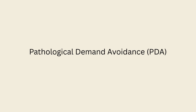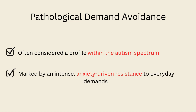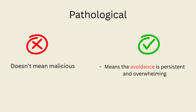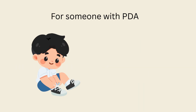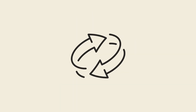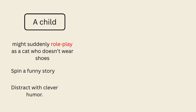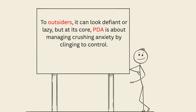Pathological Demand Avoidance, often considered a profile within the autism spectrum, is marked by an intense anxiety-driven resistance to everyday demands. The word 'pathological' here doesn't mean malicious — it means the avoidance is persistent and overwhelming, not just the occasional stubborn 'no' every child gives. For someone with PDA, even simple requests like 'put on your shoes' or 'brush your teeth' can trigger panic that feels as urgent as a survival threat. Instead of outright refusal, avoidance often takes creative forms — a child might suddenly role-play as a cat who doesn't wear shoes, spin a funny story, or distract with clever humor. Teens and adults may use more subtle strategies like procrastination, excuses, or charming persuasion. To outsiders it can look defiant or lazy, but at its core, PDA is about managing crushing anxiety by clinging to control.